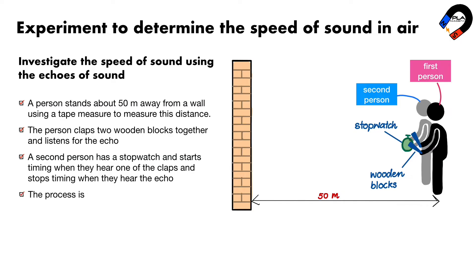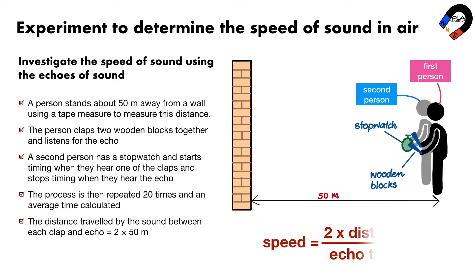The process is then repeated 20 times and an average time calculated. The distance traveled by the sound between each clap and echo will be 2 times 50 meters. The speed of sound can be calculated from this distance and the time using the equation. Speed is equal to the twice of distance to the wall divided by echo time. The echo time is time that the sound travels forward and backwards.